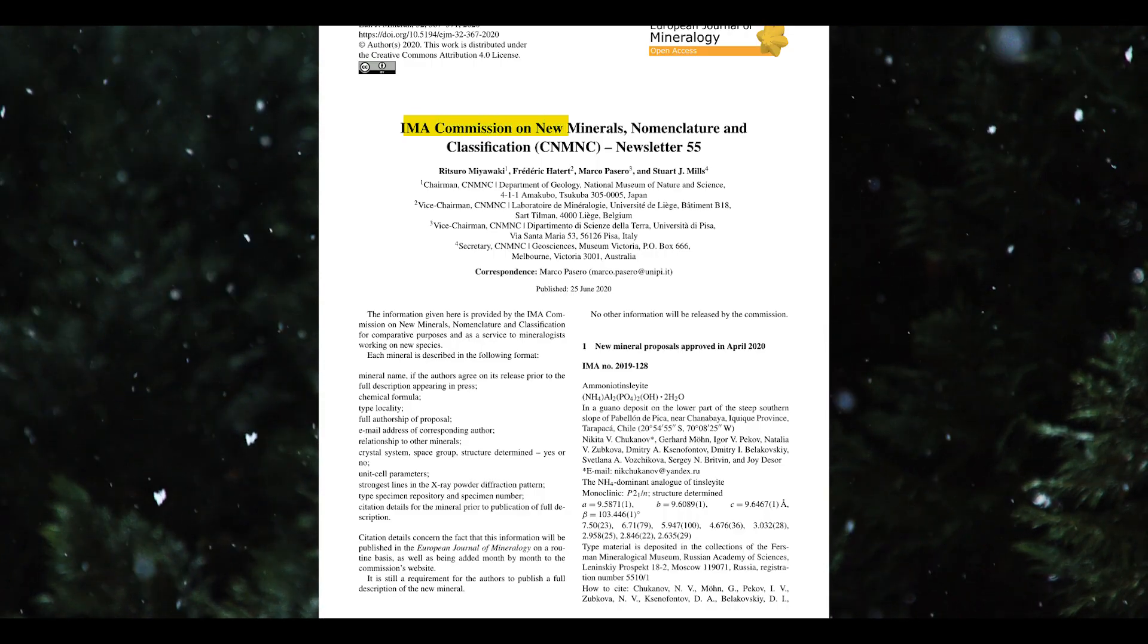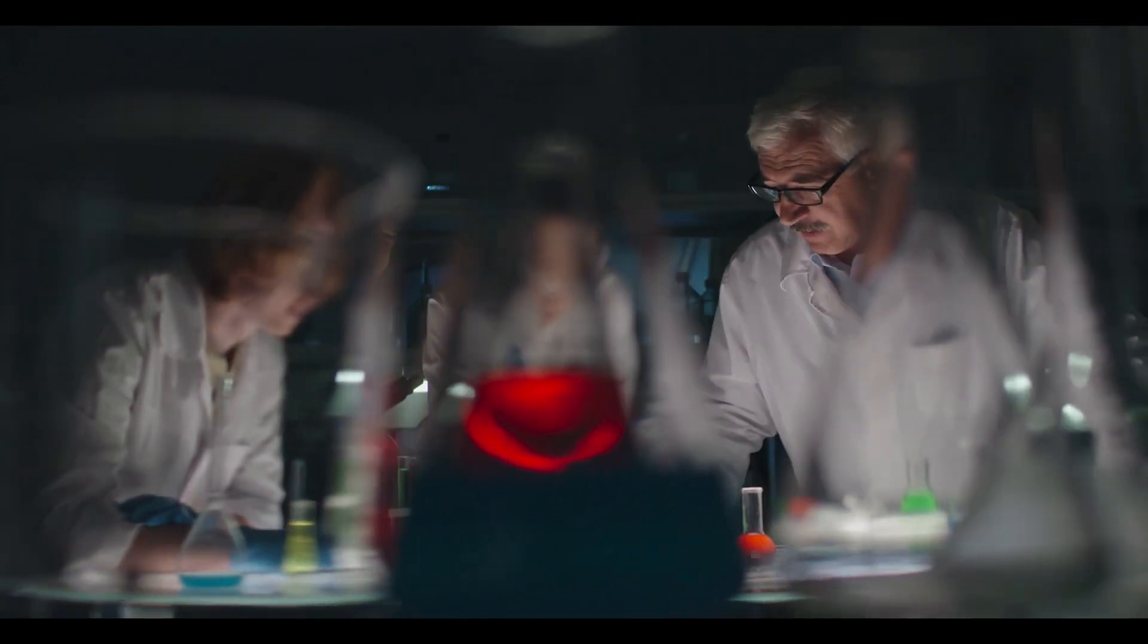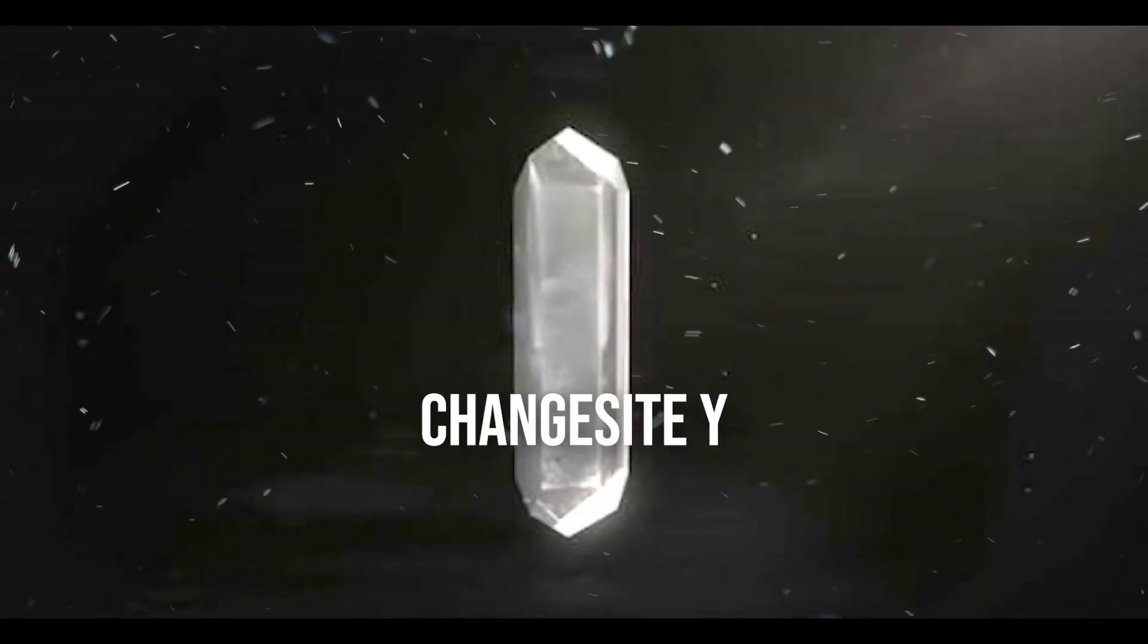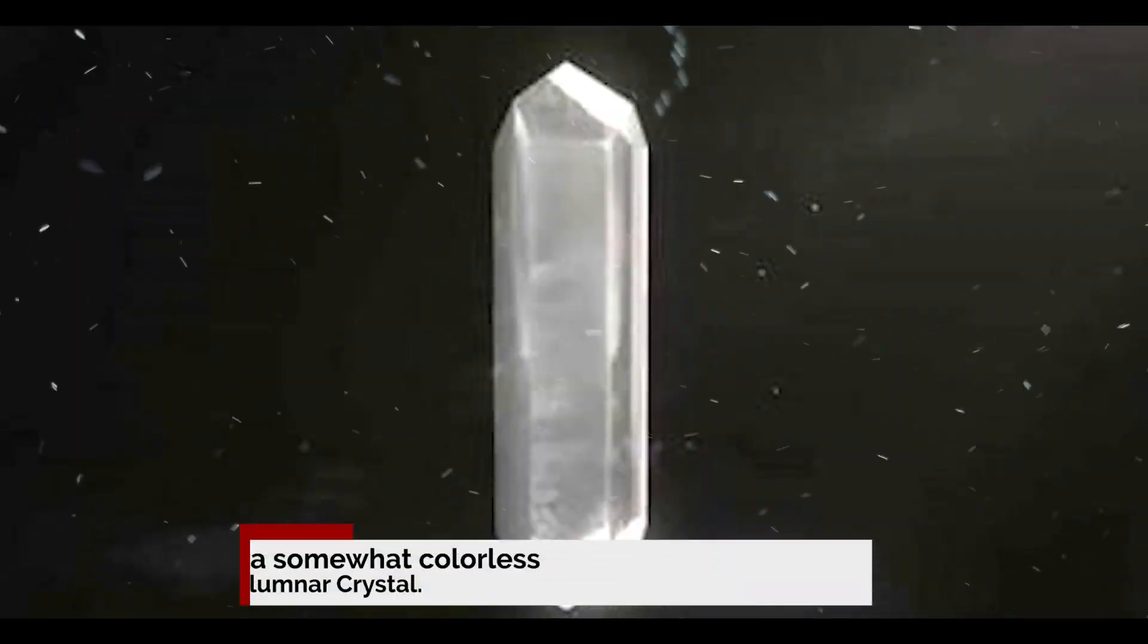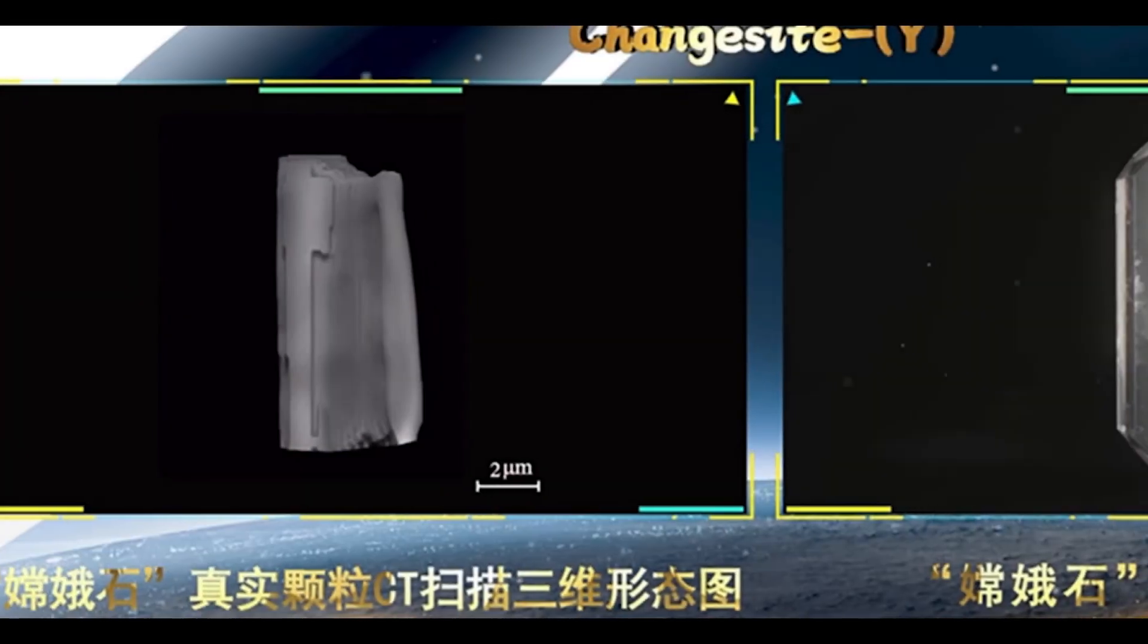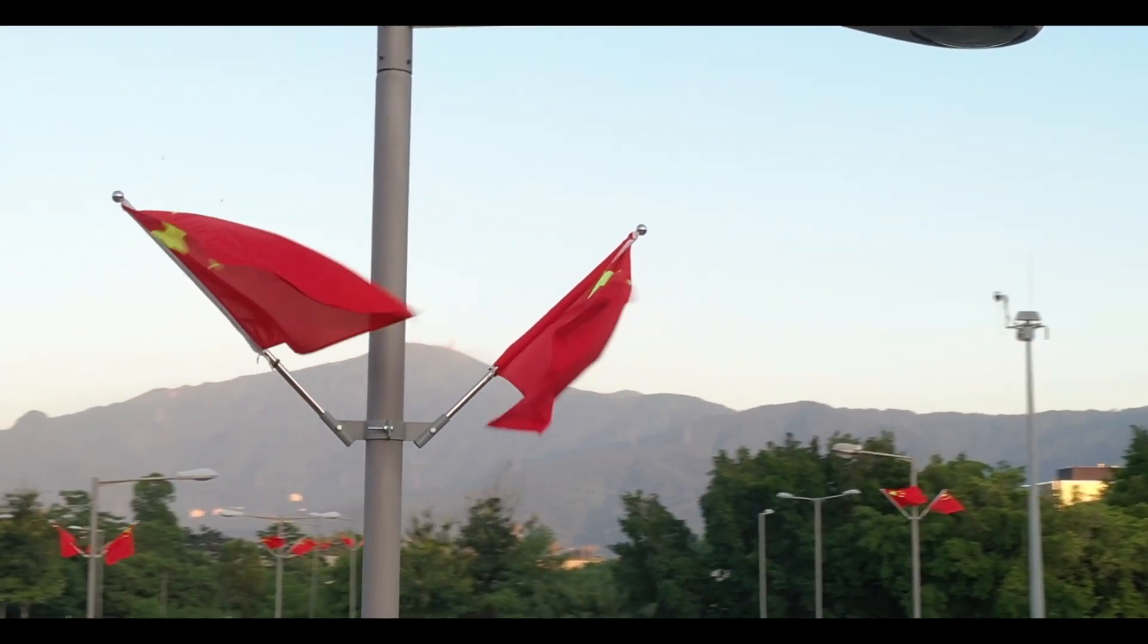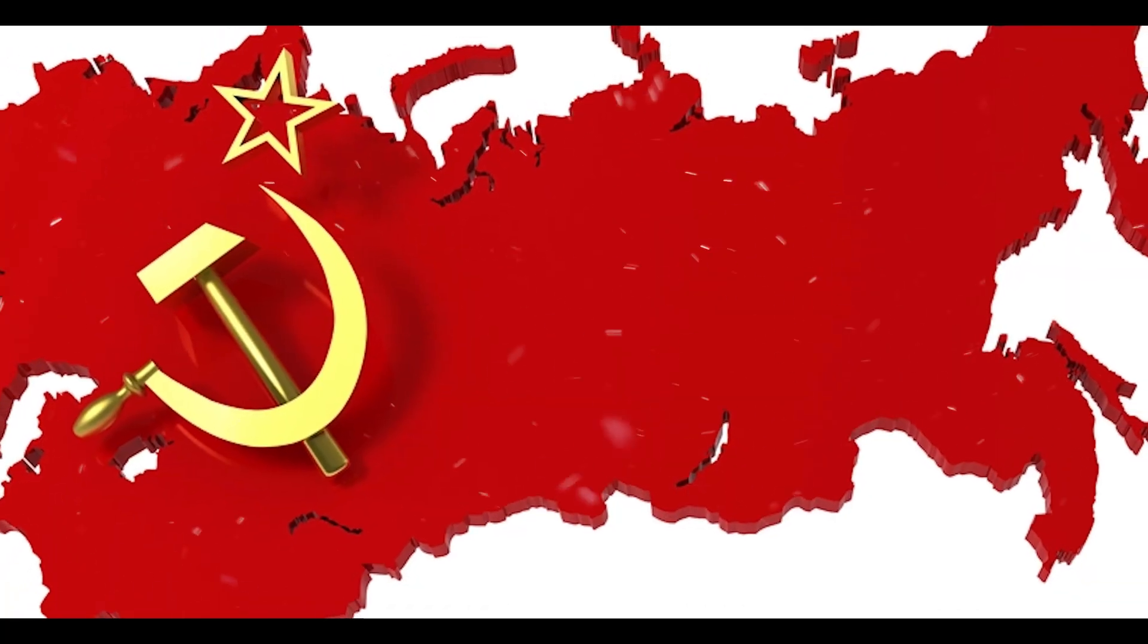The Commission on New Minerals, Nomenclature, and Classification, a body of the International Mineralogical Association, confirmed that Chang'e-Site Y is indeed a new mineral. The new finding makes China the third country to have discovered a new mineral on the moon. The Chang'e-Site Y is a somewhat colorless, transparent, and columnar crystal. The finding was announced at a press conference on September 9th.